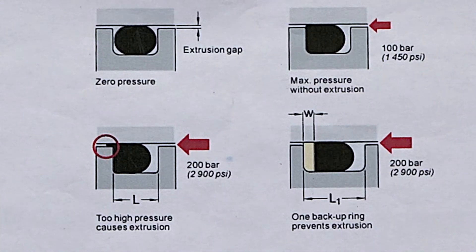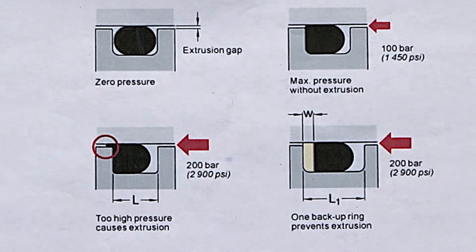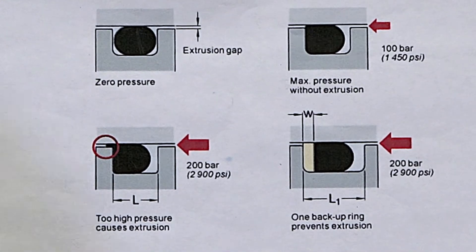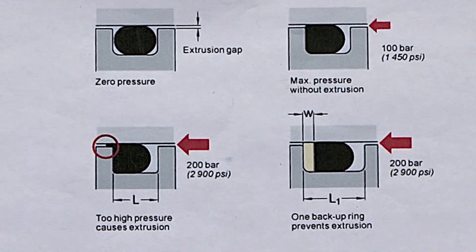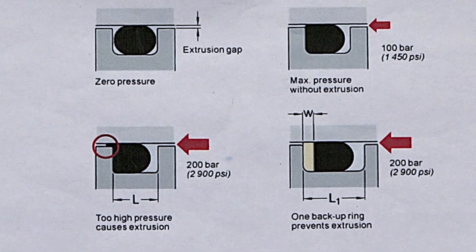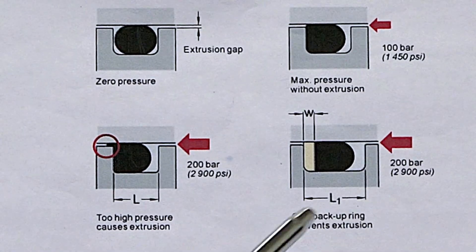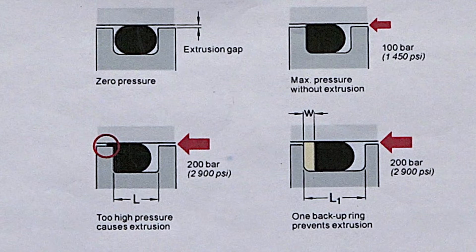Or the other reason could be the pressure is too high. If for whatever reason the pressure is too high, then sometimes it'll also try to push the O-ring through that gap. If the pressure is too high or the parts are worn, it'll start pushing through the gap. That, by the way, is called extrusion. Too high pressure or worn parts cause extrusion. What do they do to stop extrusion?